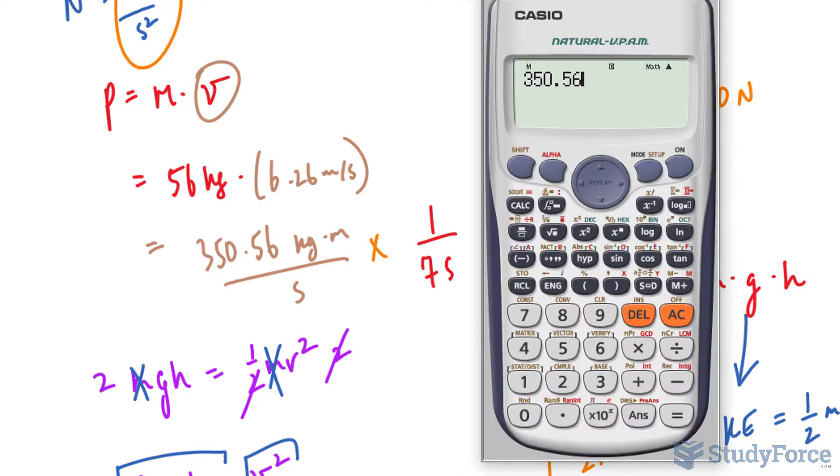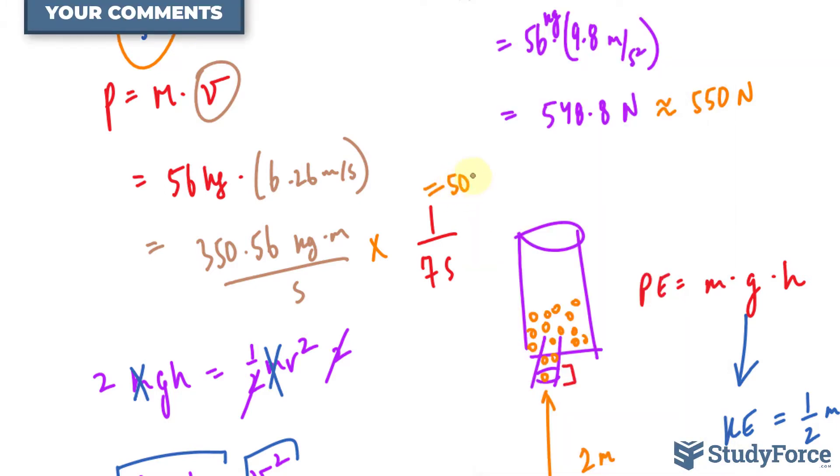So if we divide this now by 7 seconds, we end up with 50 newtons.